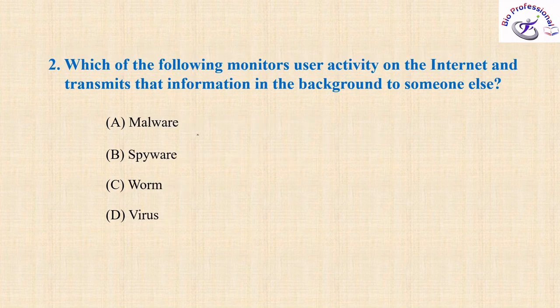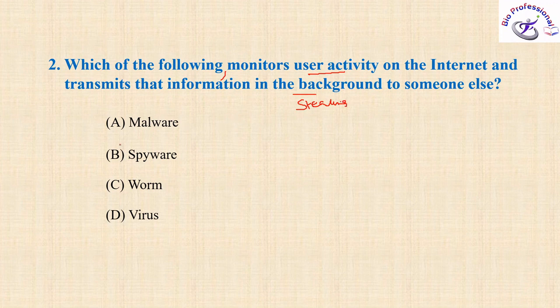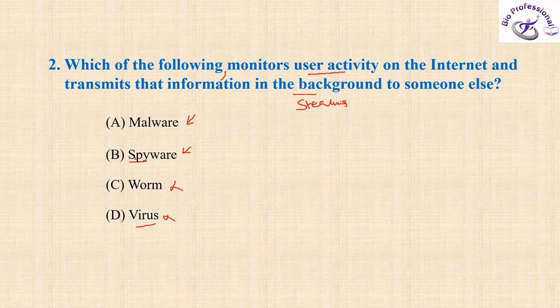The next question: which of the following monitors user activity on the internet and transmits that information in the background to someone else? This means it can monitor whatever activity you are doing and transmit the information in the background — it is stealing your information. So you can guess this is spyware. Spy means someone who is secretly collecting your data and giving it to somebody else. Virus and malware are not the answer. Most students got confused between malware and spyware.